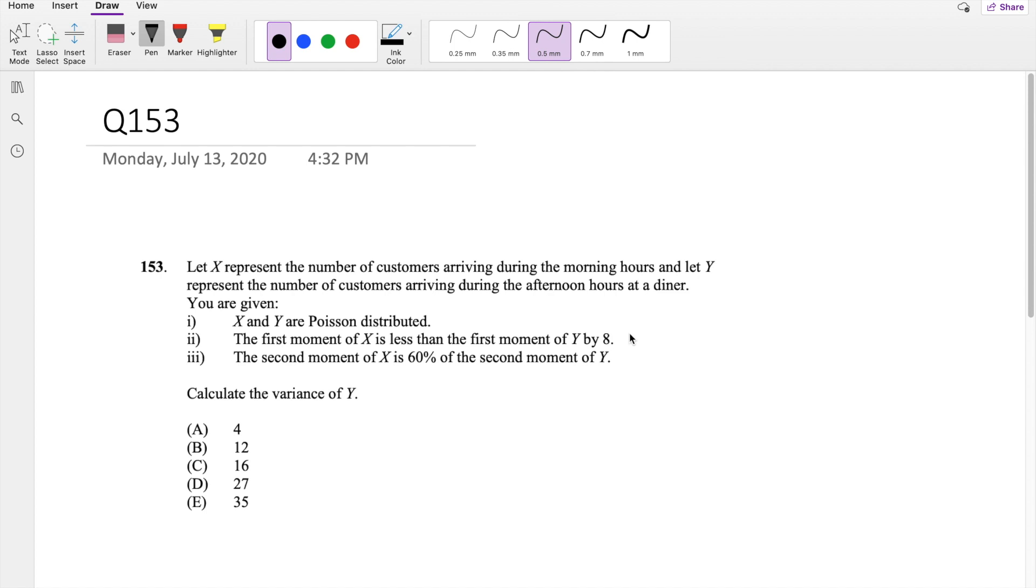So they give you that X and Y are Poisson distributed, which means that we know that the expectation of X, which is also equal to the variance of X, right? So we're going to assign this variable to be a. And likewise, if we know that Y is also Poisson distributed, then we know that the variance and the expectation are the same.